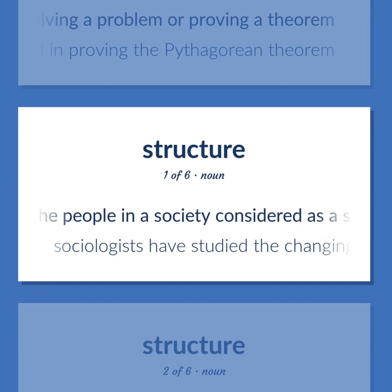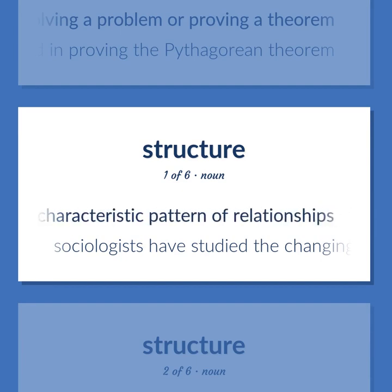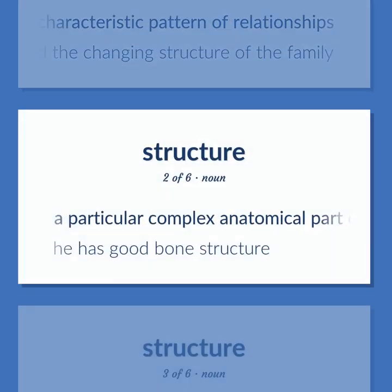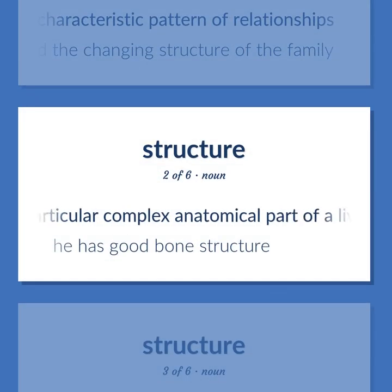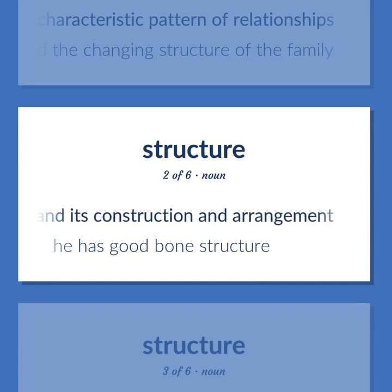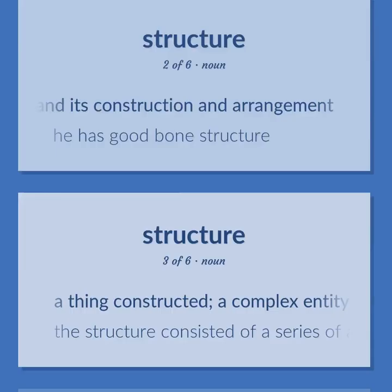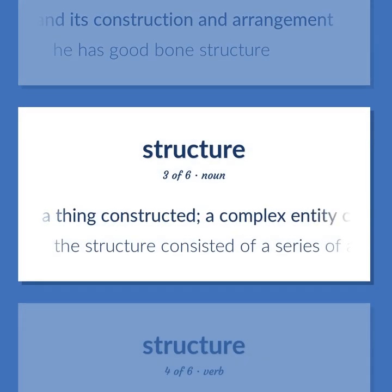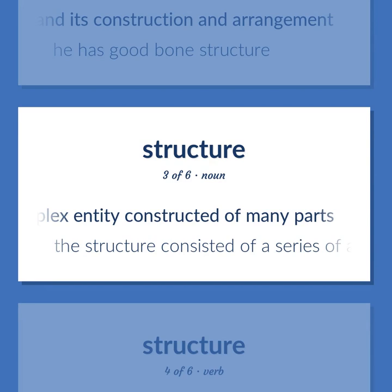The people in a society considered as a system organized by a characteristic pattern of relationships. Sociologists have studied the changing structure of the family. A particular complex anatomical part of a living thing and its construction and arrangement. He has good bone structure. A thing constructed; a complex entity constructed of many parts. The structure consisted of a series of arches.